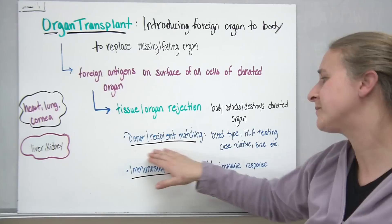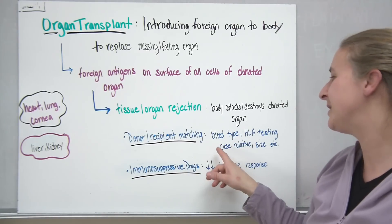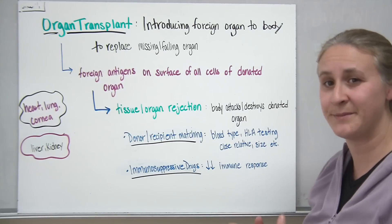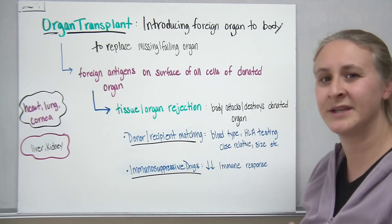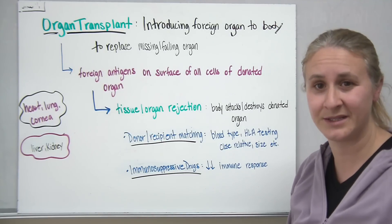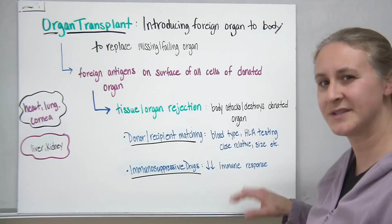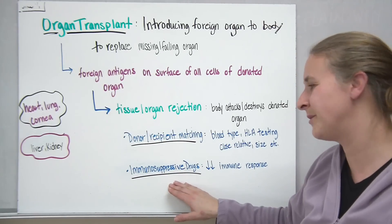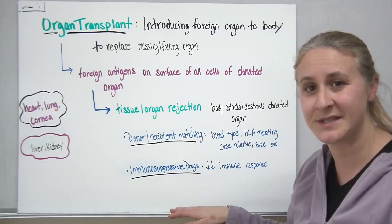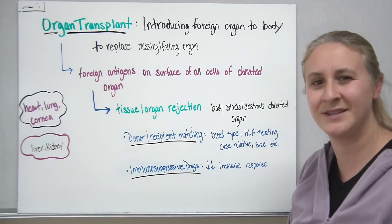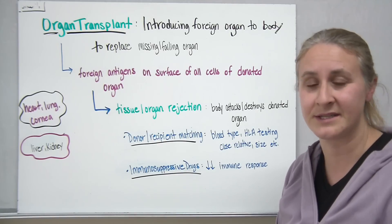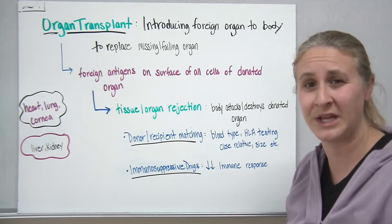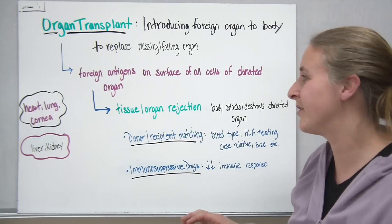To help prevent rejection, doctors perform donor-recipient matching — matching blood type and doing HLA testing to match as many surface proteins as possible. Finding a close relative, ideally a twin, is best for matching. They also give patients immunosuppressive drugs, which decrease the activity of the immune system so it doesn't respond to the foreign antigens on the donated organ's cells. However, this means the body is also less effective at fighting other diseases, so patients must be careful about exposure to illness.